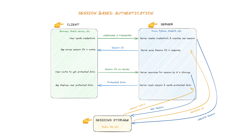Here are the steps involved in session-based auth. The user enters their credentials in a login form and sends them to the server. The server verifies the credentials and creates a new session, then retrieves a session ID from the session storage. The server returns the session ID to the client, and the client saves it in a cookie.